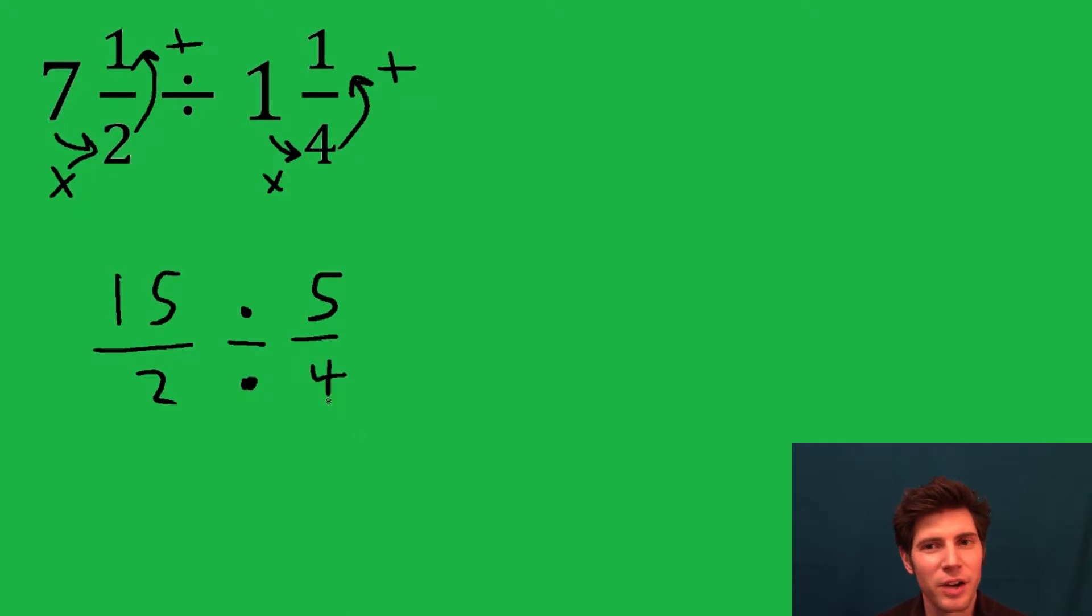Now we're just dividing fractions. Anytime you divide a fraction, you rewrite the first one, multiply, and flip the second one. So the 5 fourths became 4 fifths.